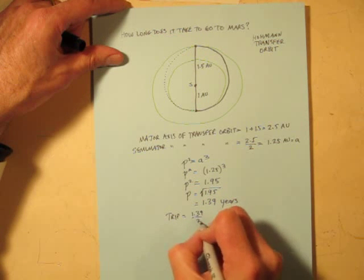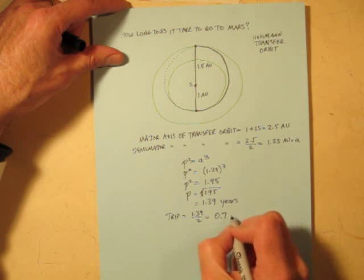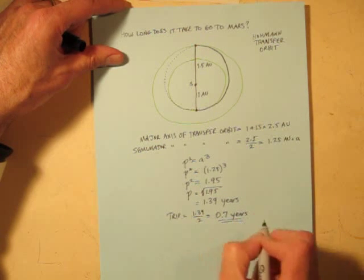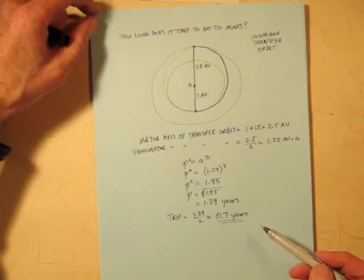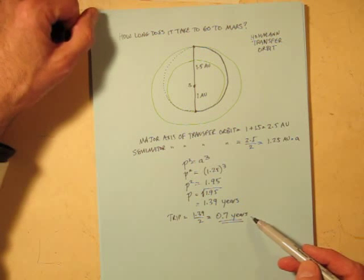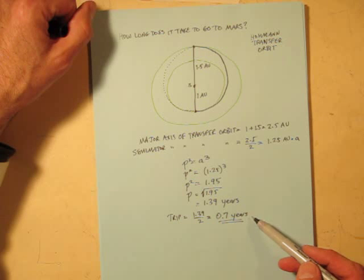So our trip will be half of that, 1.39 divided by 2, about 0.7 years. That's how long it takes to get from Earth to Mars. That's about eight and a half months, about 255 days.